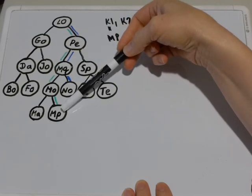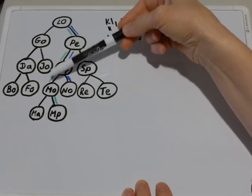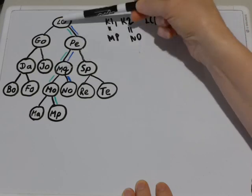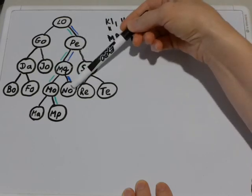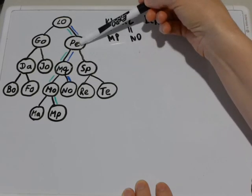All the nodes from the root up to the nodes that we're looking at are called ancestors of these nodes. So, for example, ancestors of MP are MO, MQ, PE and LO. Ancestors of NO are MQ, PE and LO.